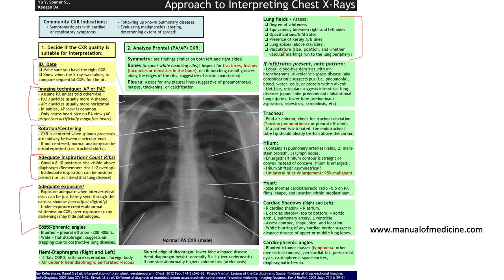If you see infiltrates, note the pattern. Lobar, cloud-like densities with air bronchograms usually suggest pneumonia. Net-like reticular infiltrates suggest interstitial lung disease. Upper lobe predominance speaks to inhalation lung injury, while lower lobe predominance suggests aspiration, asbestosis, or sarcoidosis.